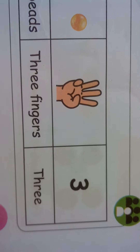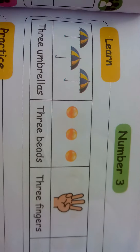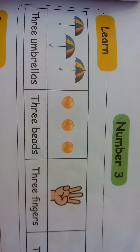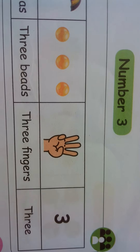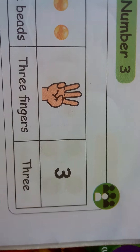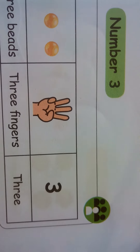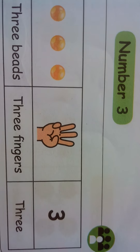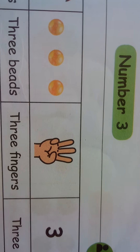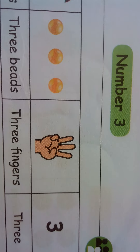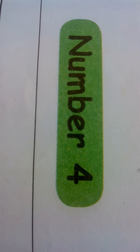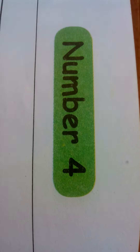This is called the number name. T-H-R-E-E — number name. So three umbrellas, three beads, three fingers — numeral three, number name three. Now let us go to the next lesson: number four.